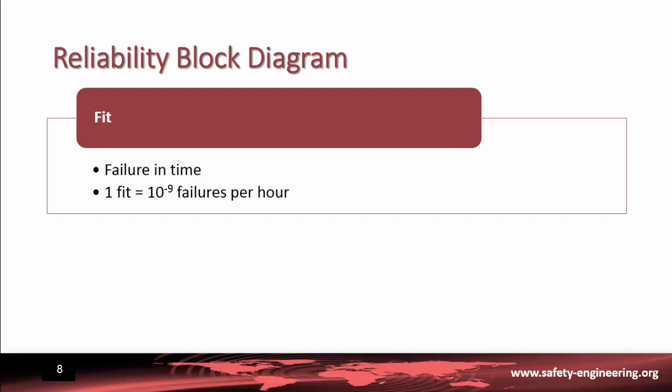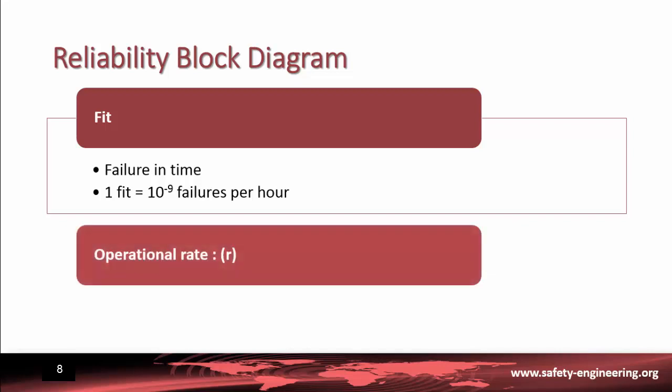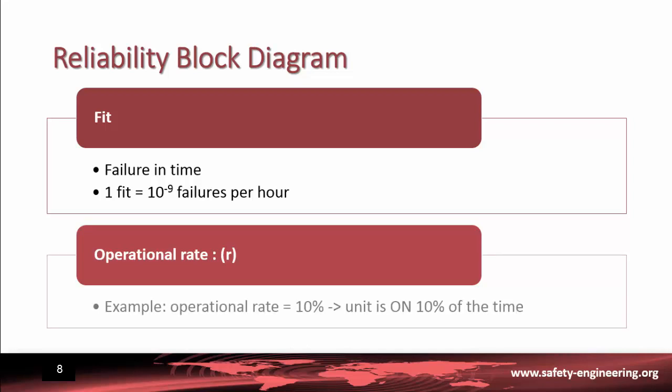Also, not all units are required to work continuously. This is known as operational rate. For instance, an operational rate of 10% means that the unit is only on 10% of the time. All this information has to be taken into account when calculating the reliability of each unit.